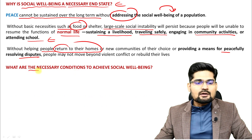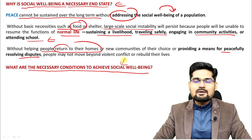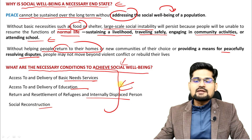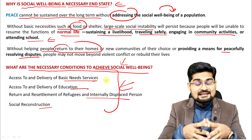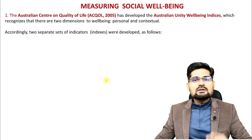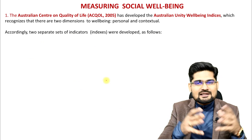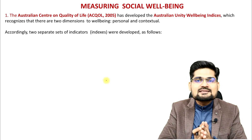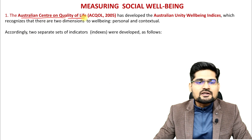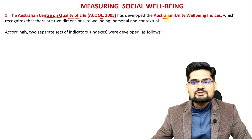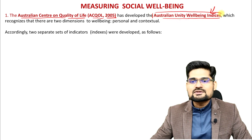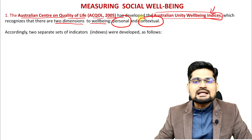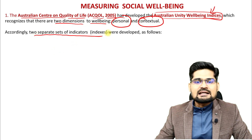What are the necessary conditions to achieve social well-being? The same four things: basic needs, education, displacement resolution, and reconstruction. To measure social well-being, one approach is from the Australian Centre on Quality of Life (ACQOL, 2005), which developed the Australian Unity Well-being Indices, recognizing two dimensions: personal and contextual. According to two separate sets of indicators, they developed indices at personal and national level.